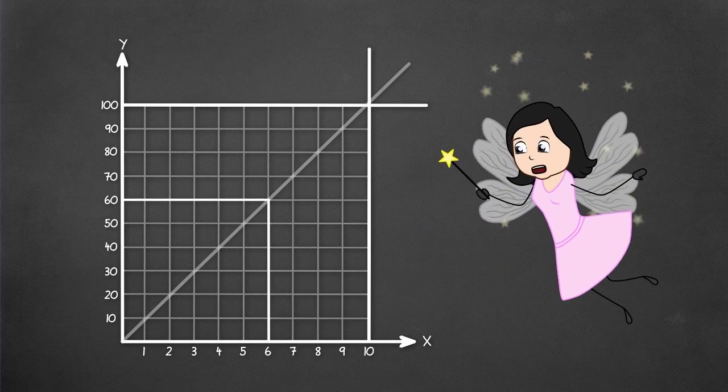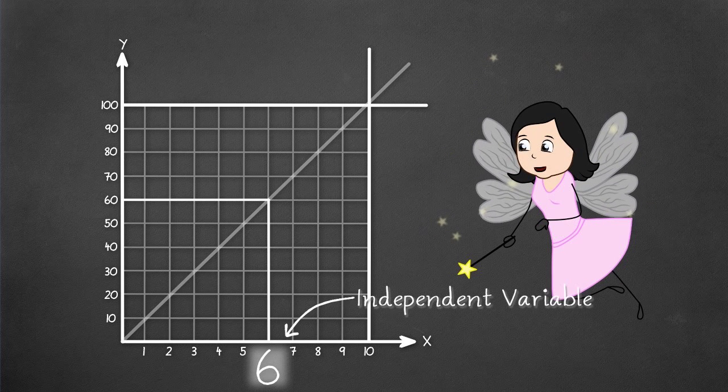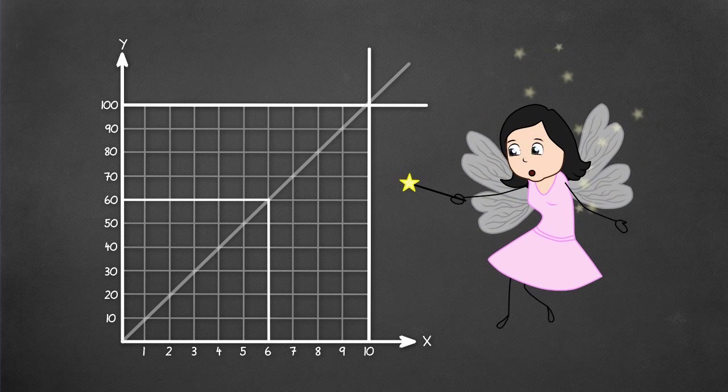Here, the number of minutes that you can speak is called an independent variable and the cost of phone call per minute is called a dependent variable.